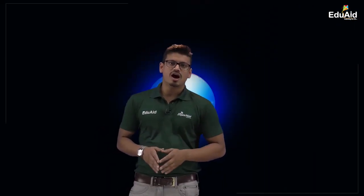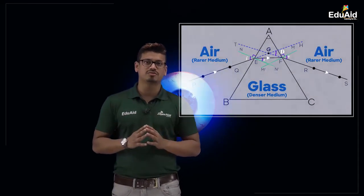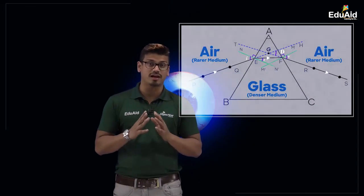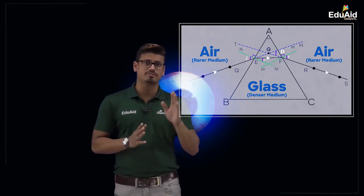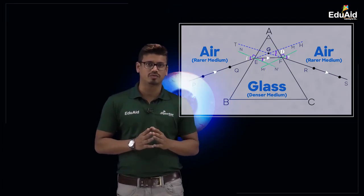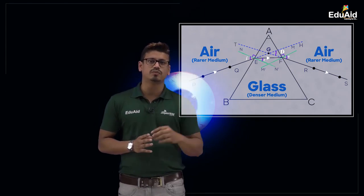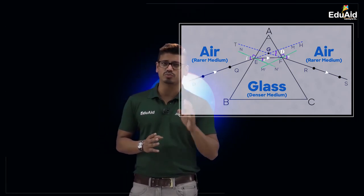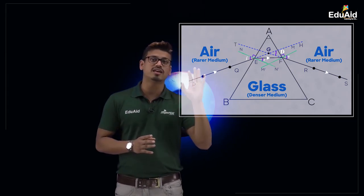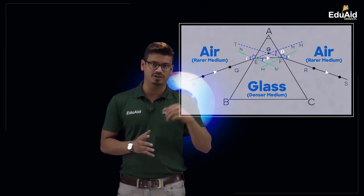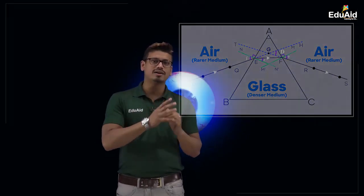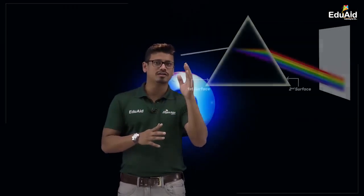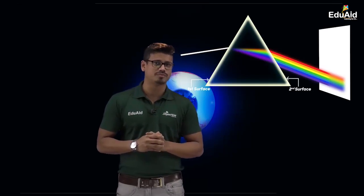After that we have studied how a single ray of light behaves when it is passed through a rectangular glass prism, and we emphasized on what is the angle of deviation. We also studied how white light behaves when it is passed through a rectangular glass prism.